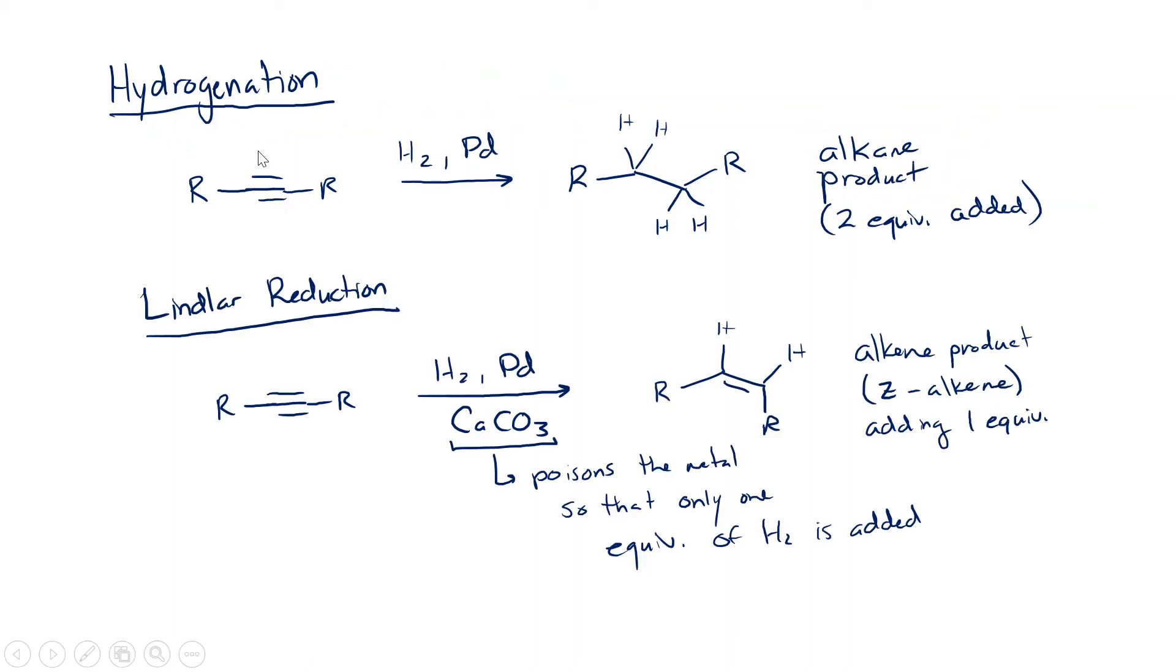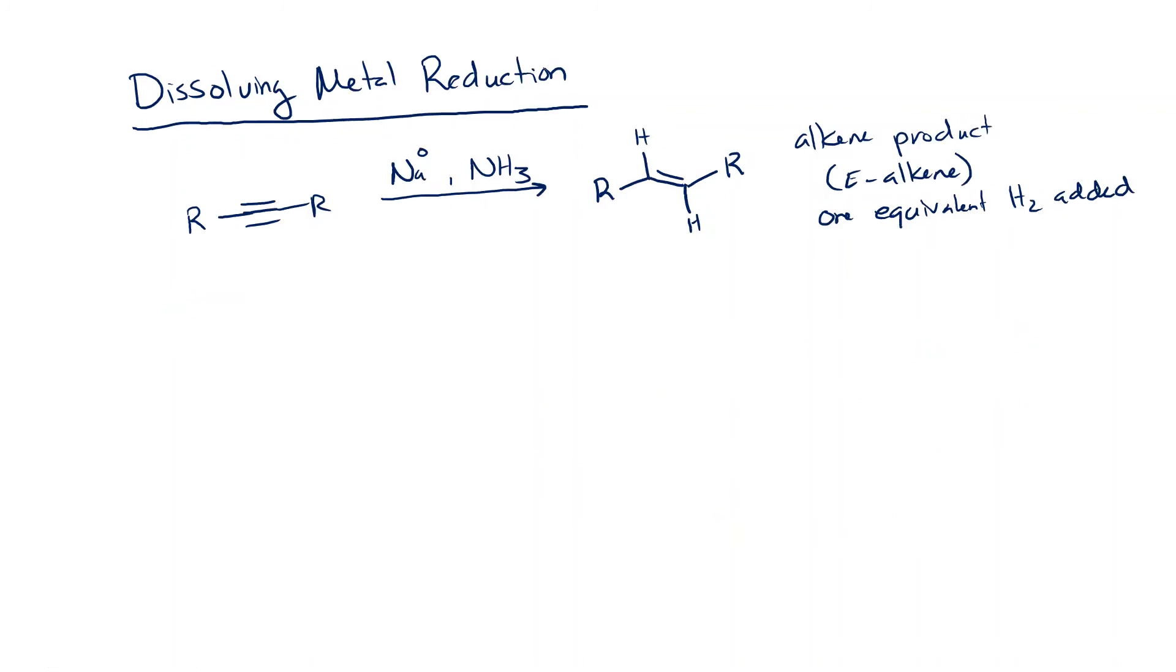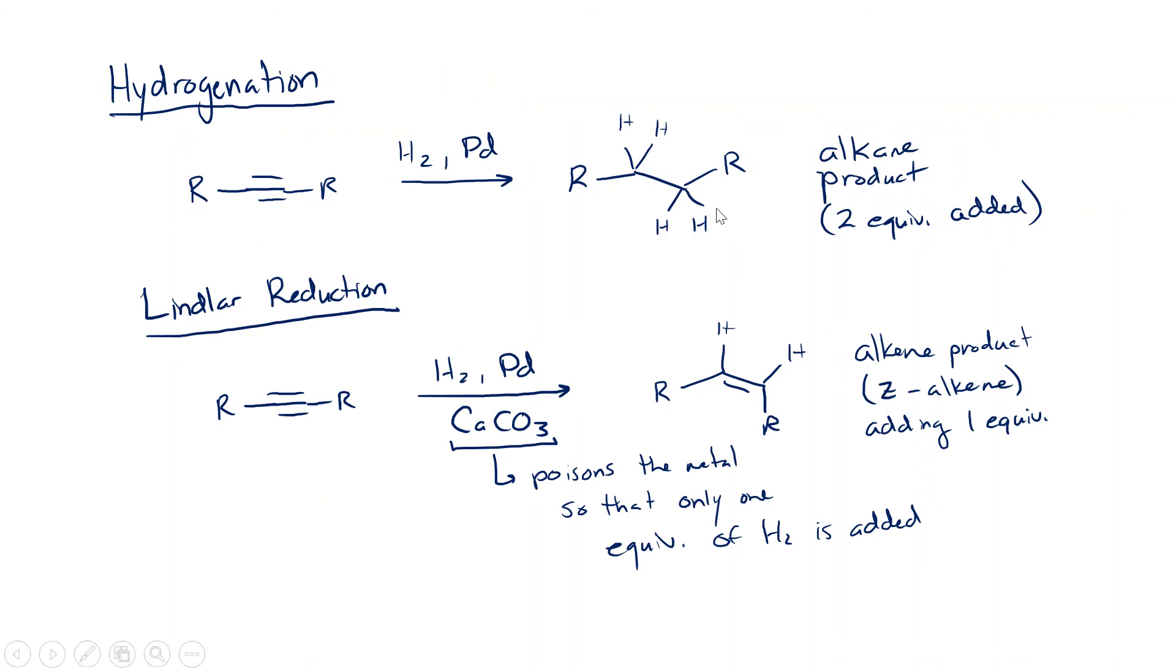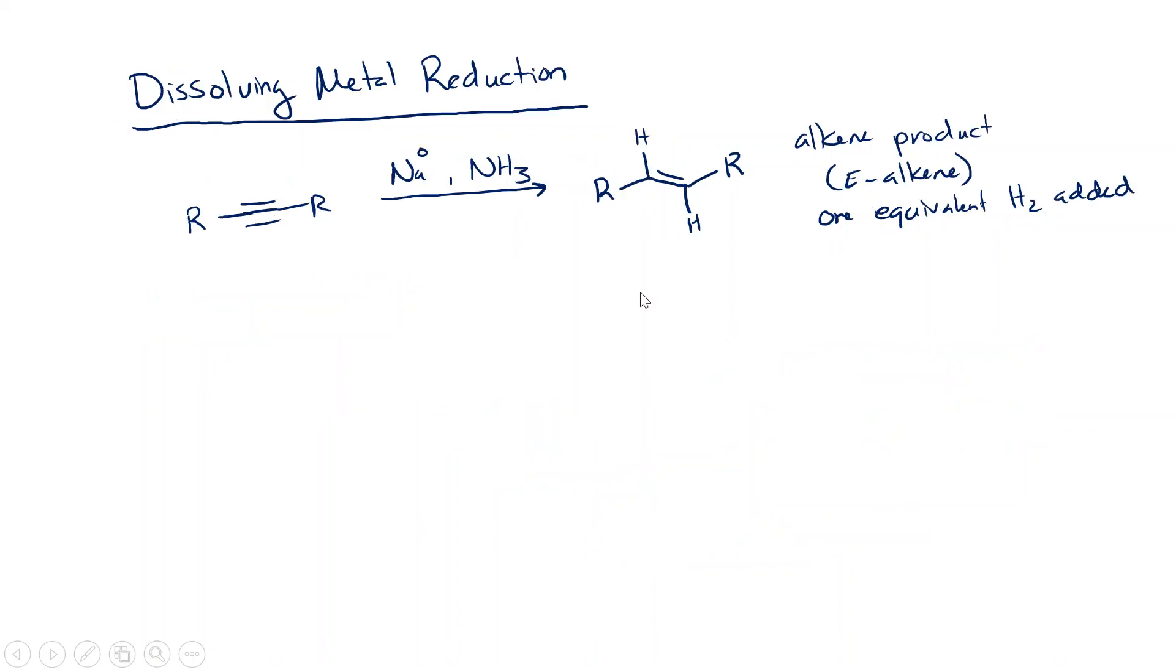So these three reactions, hydrogenation, the Lindlar reduction, and the dissolving metal reduction, all add hydrogens to alkynes. We all start with an alkyne, and then we add hydrogens. Depending on what you want your product to be, we have three different products. We have the alkane where we've added two equivalents of hydrogen. We have the Z-alkene or the cis-alkene where we've added one equivalent of hydrogens in a cis fashion. They're added on the same side. Or we get the trans-alkene or the E-alkene, and we add one equivalent across on opposite sides of the double bond.